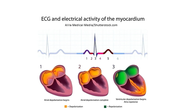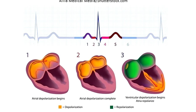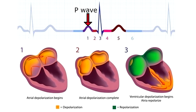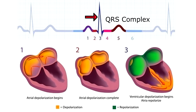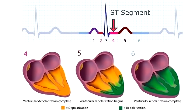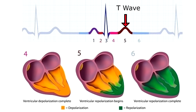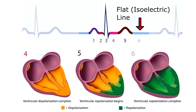Now let's recap all that information and look at the PQRST complex to see how depolarization and repolarization occur in each part. Section one - the P wave - represents atrial depolarization beginning, so we have contraction of the atria. Section two - the PR segment - is atrial depolarization complete. Section three - the QRS complex - represents ventricular depolarization beginning, and within it, but not visible, is atrial repolarization. Section four - the ST segment - is ventricular depolarization completing. Section five - the T wave - is ventricular repolarization beginning. And section six is the flat isoelectric line, representing ventricular repolarization complete.